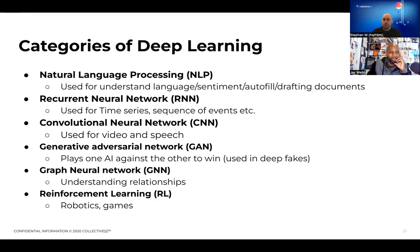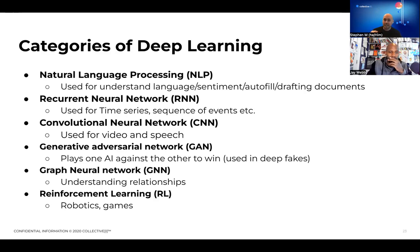Natural language processing creates more features that a recurrent neural network would use. Those features are based on language. They're stacking on top of each other and all starting to work together.